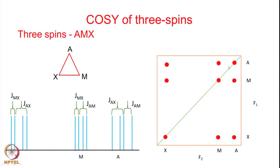This results in a cross peak structure where you have cross peaks from A to M, A to X, M to A, M to X, and from X to M and A. What is important is the fine structure in the cross peaks, because that is where you can actually measure the coupling constants. In the diagonal peaks, you generally cannot measure coupling constants because of the dispersive nature and low resolution. The cross peaks are the information carriers - they establish correlations and allow measurement of coupling constants.